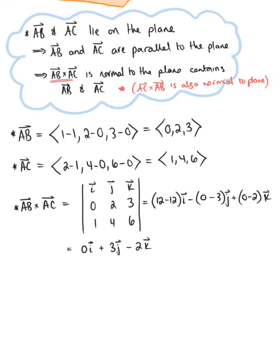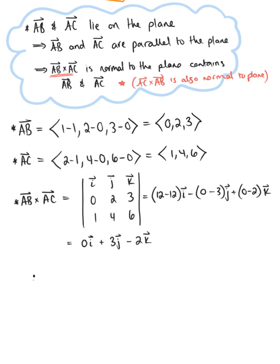We can make our conclusion here and say that, therefore, the vector 0, 3, negative 2. And I want you to note, when we have a 0 component like this, usually we don't even include it in our final answer. We would simply write this as 3 j hat minus 2 k hat. This vector is normal to the plane containing points A, B, and C.